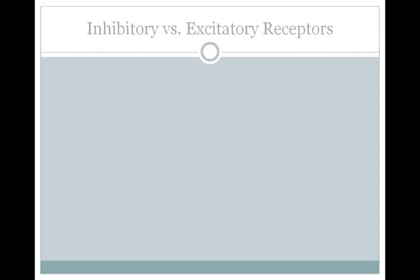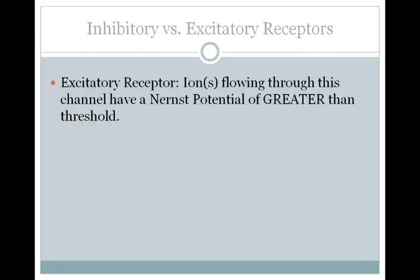A neurotransmitter can bind to an inhibitory or an excitatory receptor. An excitatory receptor is going to want to move the membrane potential towards threshold to cause an action potential, whereas an inhibitory receptor will want to move the membrane potential away from threshold and inhibit an action potential. Excitatory receptors either indirectly or directly open ion channels that allow through an ion or ions that have a Nernst potential of greater than threshold. This means the ion or ions moving through will want to bring the membrane potential up towards threshold, depolarizing the cell. Sodium channels are a good example — sodium's Nernst potential is very positive compared to threshold, so opening a sodium channel causes sodium ions to enter the cell and depolarize it towards threshold.